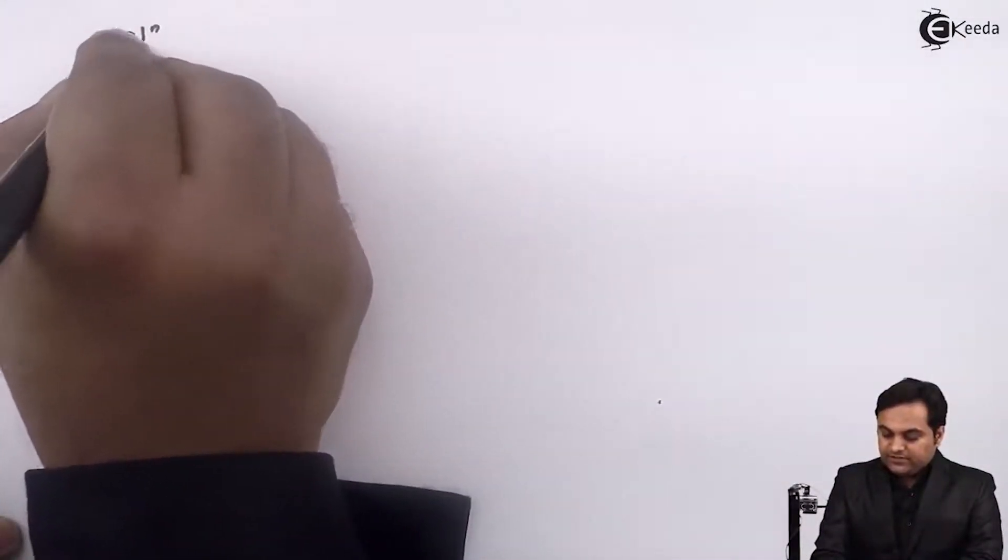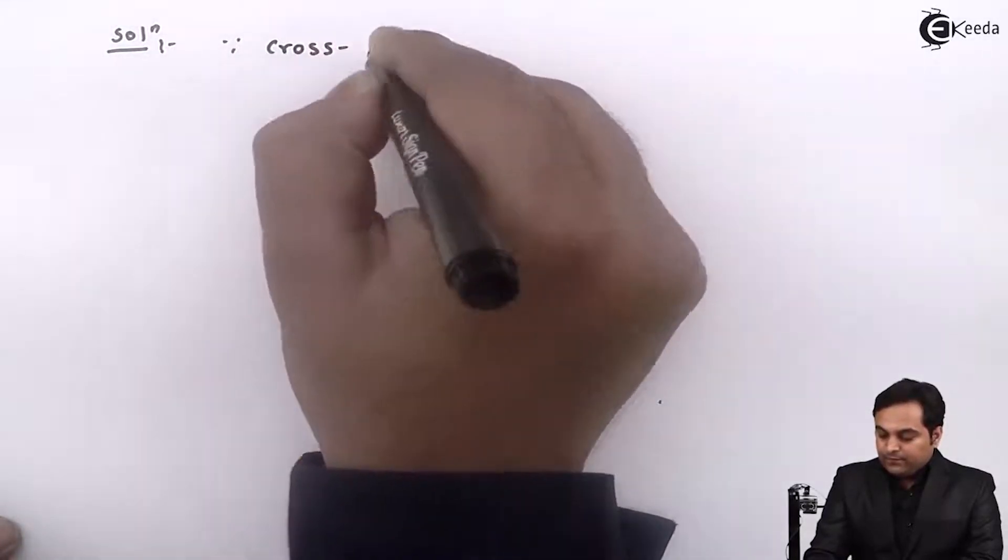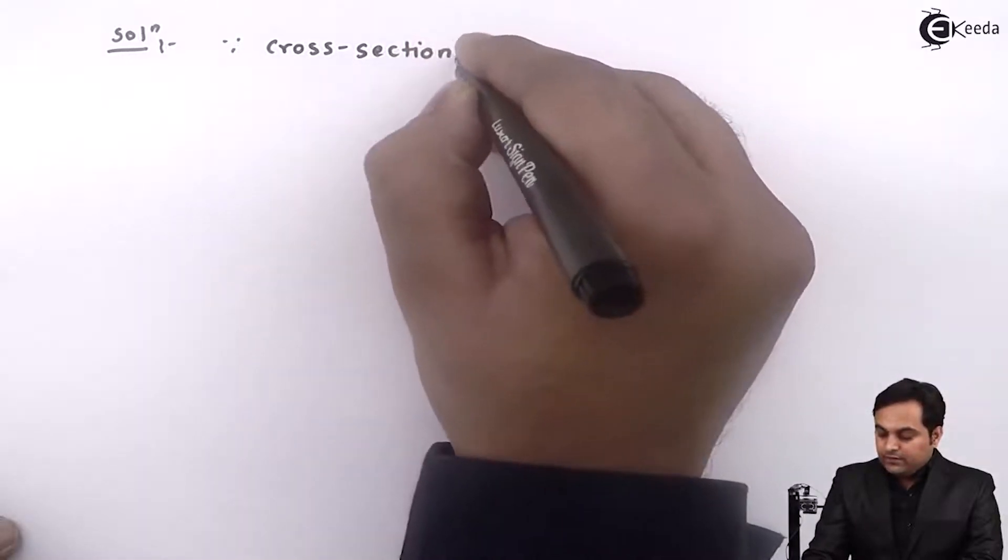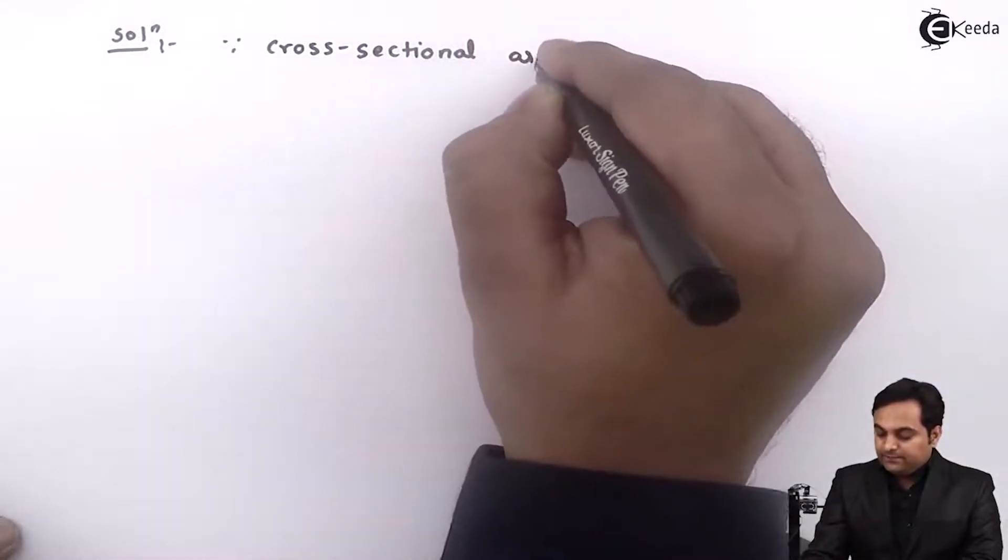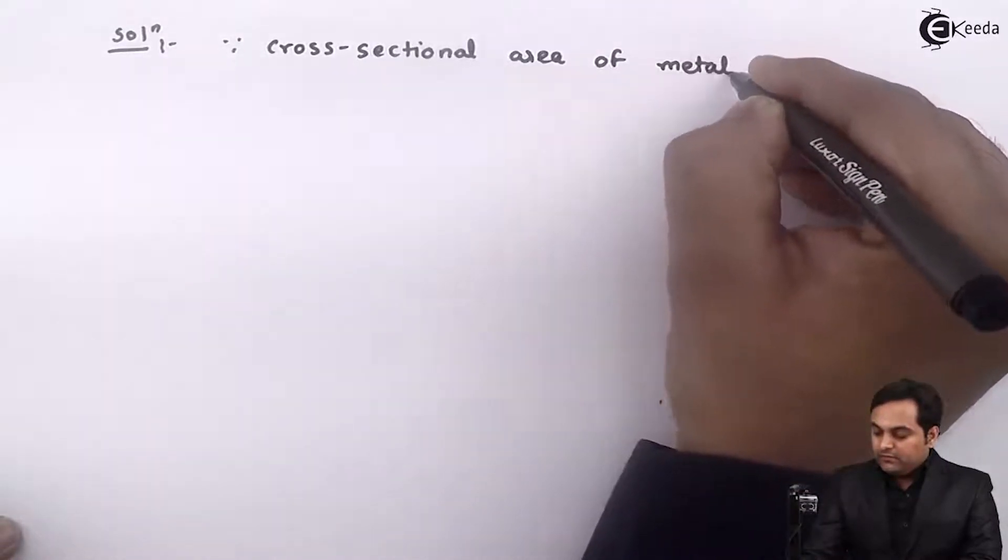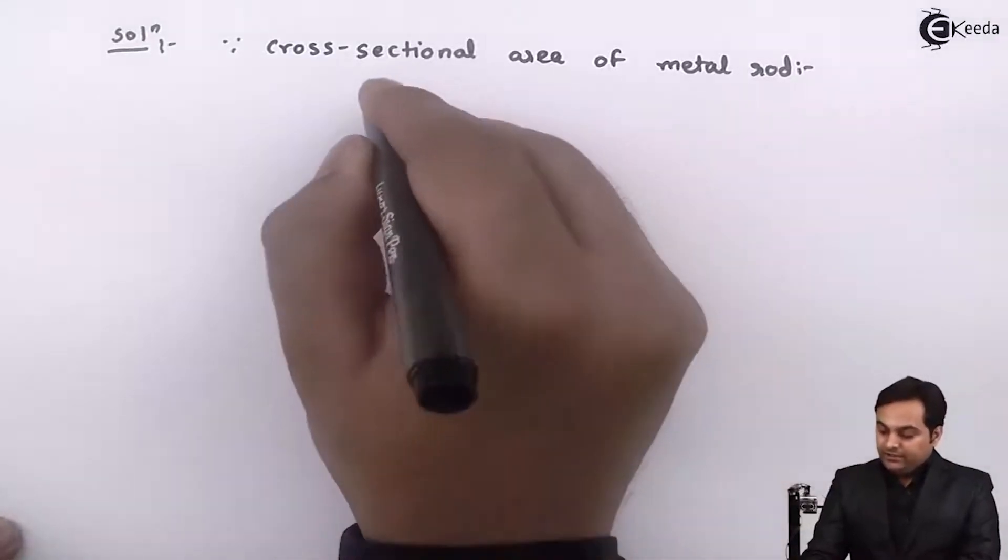In solution first I will say that since cross sectional area of metal rod, it is denoted by capital A